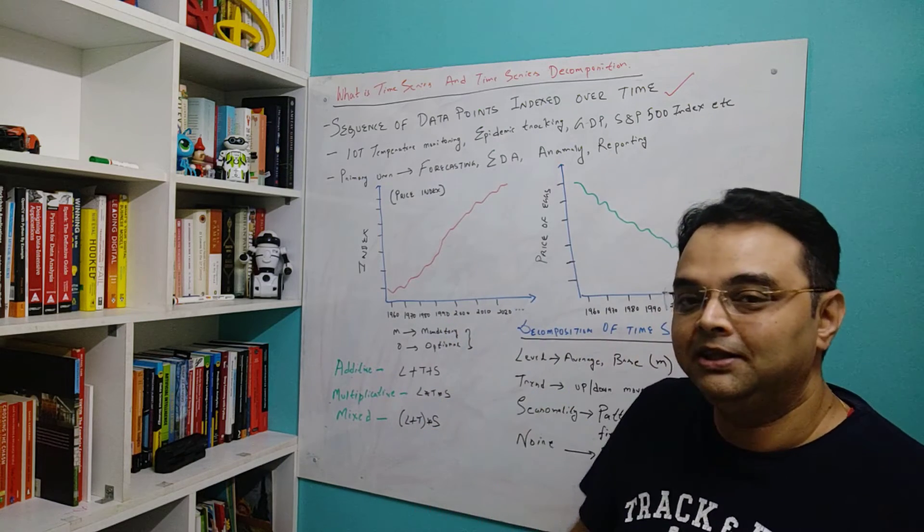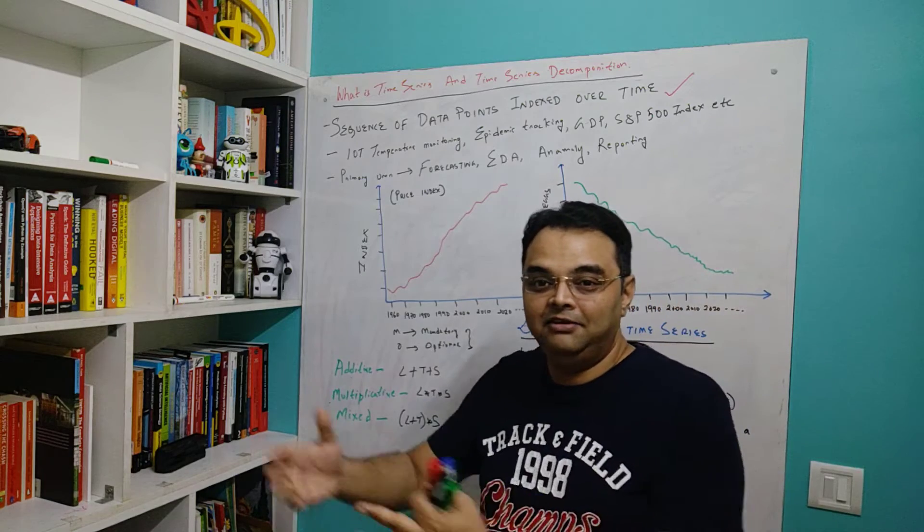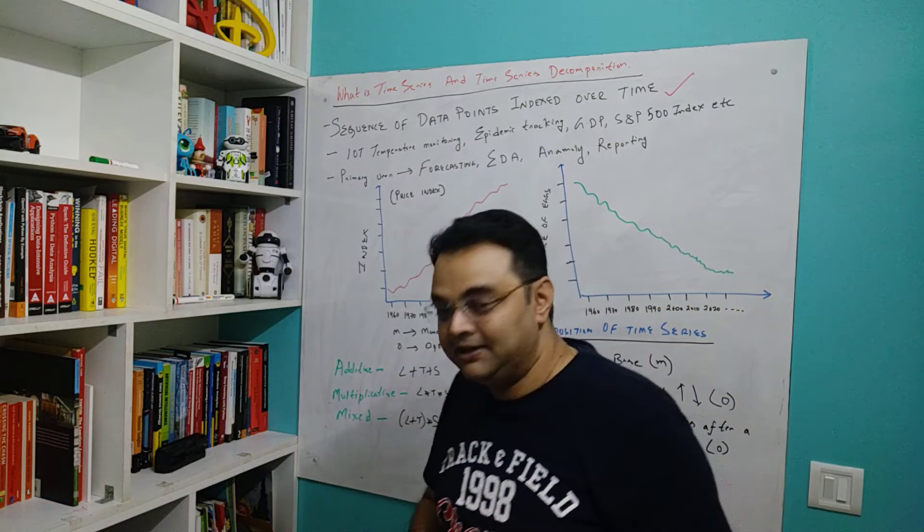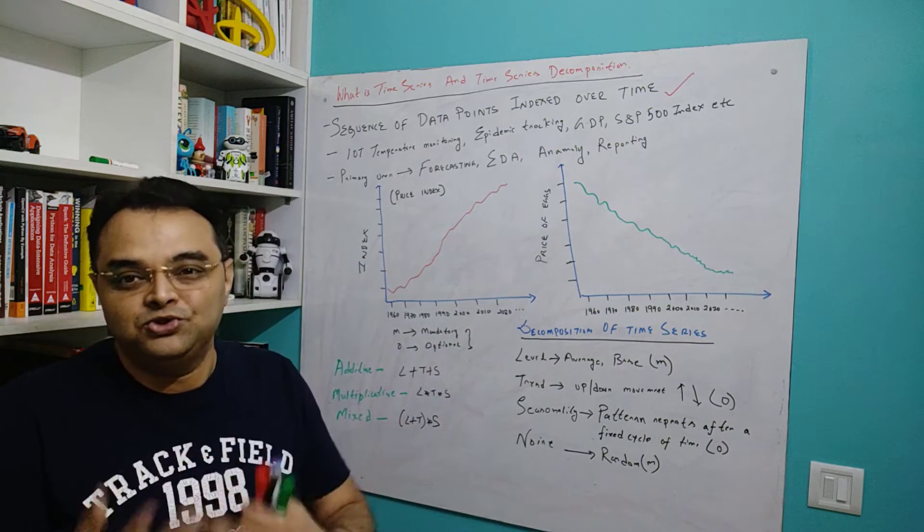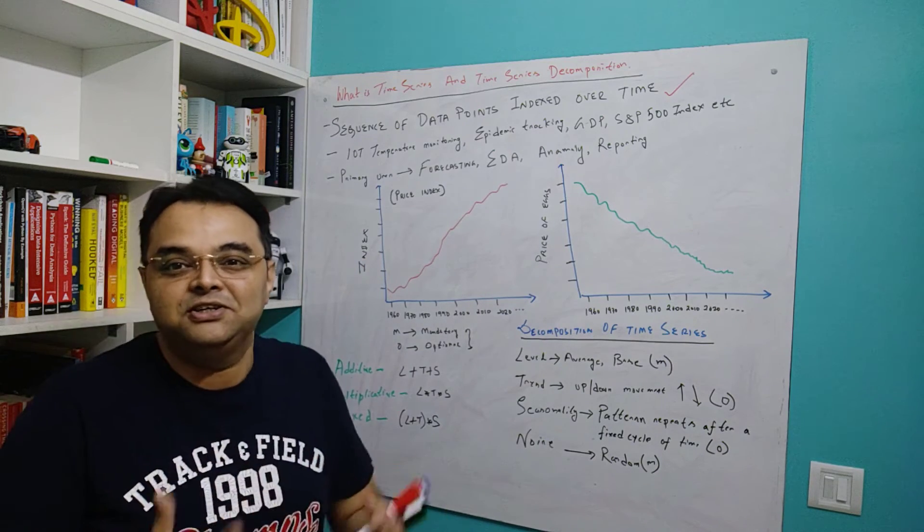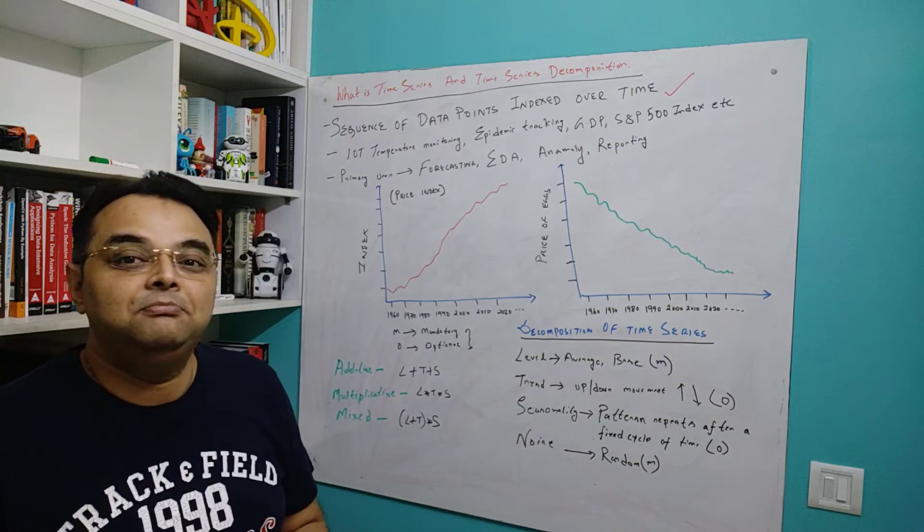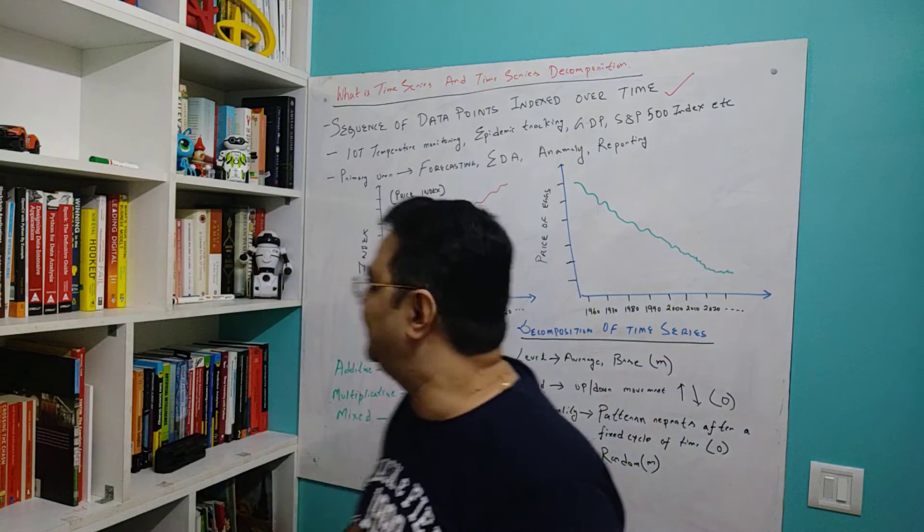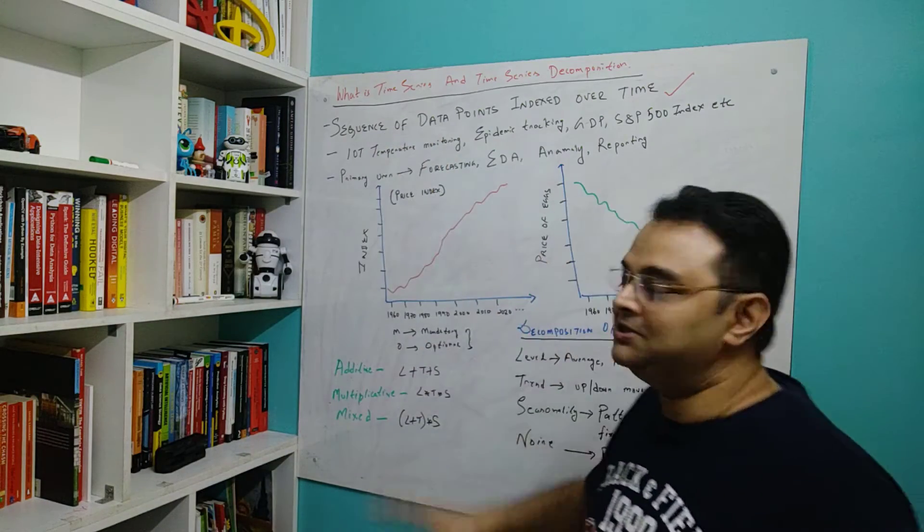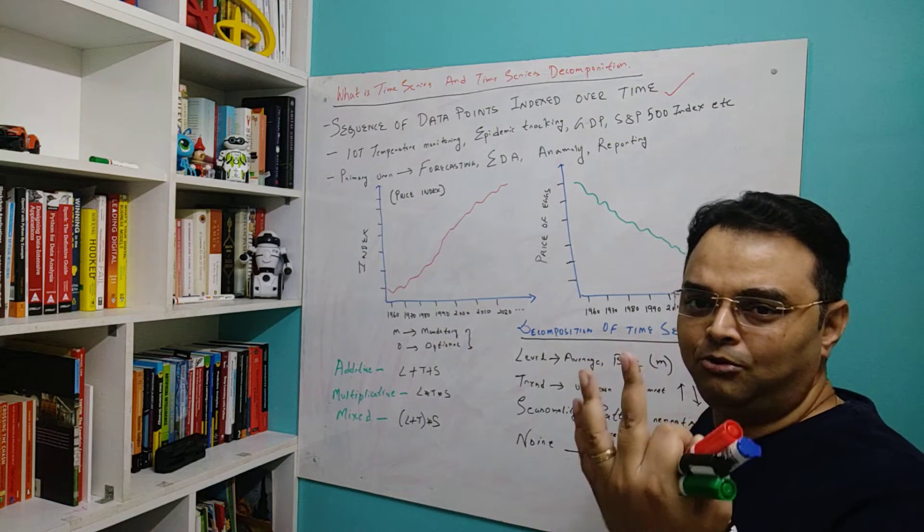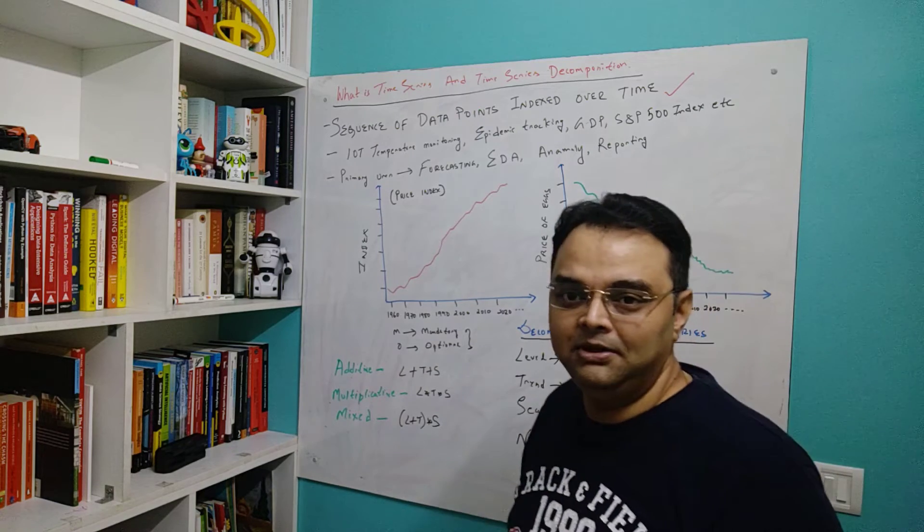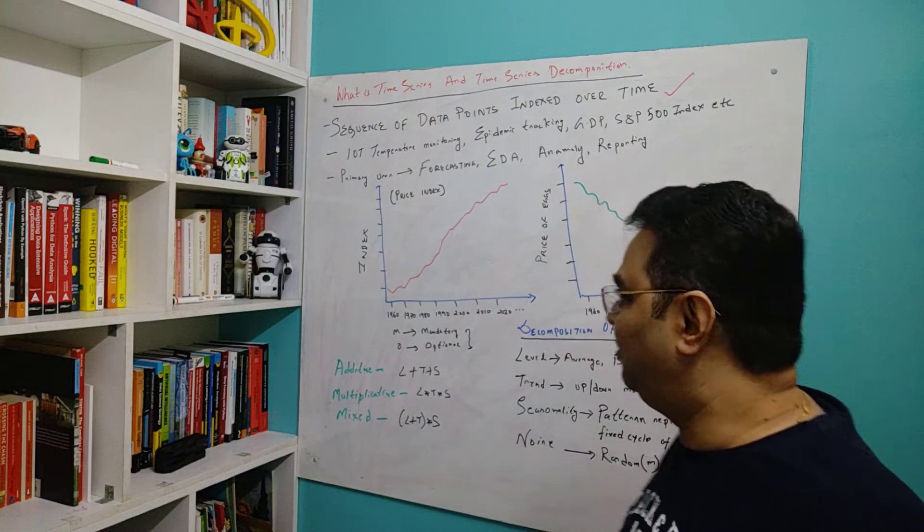It could be monthly, it could be yearly, even every decade or every 10 years. That is one example of time series for univariate. If you are monitoring two data points, like temperature and humidity, then it's multivariate time series. So that is the definition - sequence of data points indexed over time, because data points are on your y-axis and your indexing of time is on your x-axis.